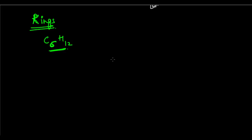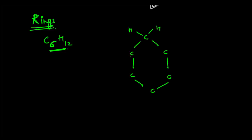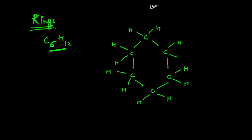Put six carbon atoms in a ring and attach each of them with single covalent bonds. There are 12 hydrogens, and since each carbon can form two more bonds, we attach two hydrogens to each carbon. You can see here we have six carbon atoms and twelve hydrogen atoms, and this compound is arranged in the form of a ring.